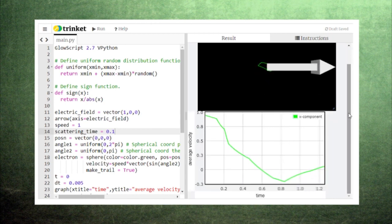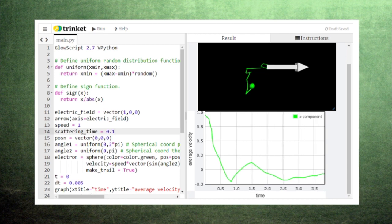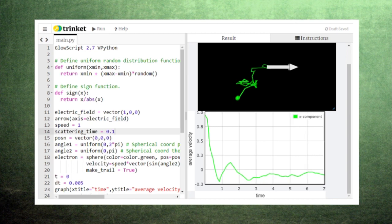We can also graph the electron's average velocity to quantify this behavior. When we increase the electric field or the scattering time, the electron's average velocity becomes faster.